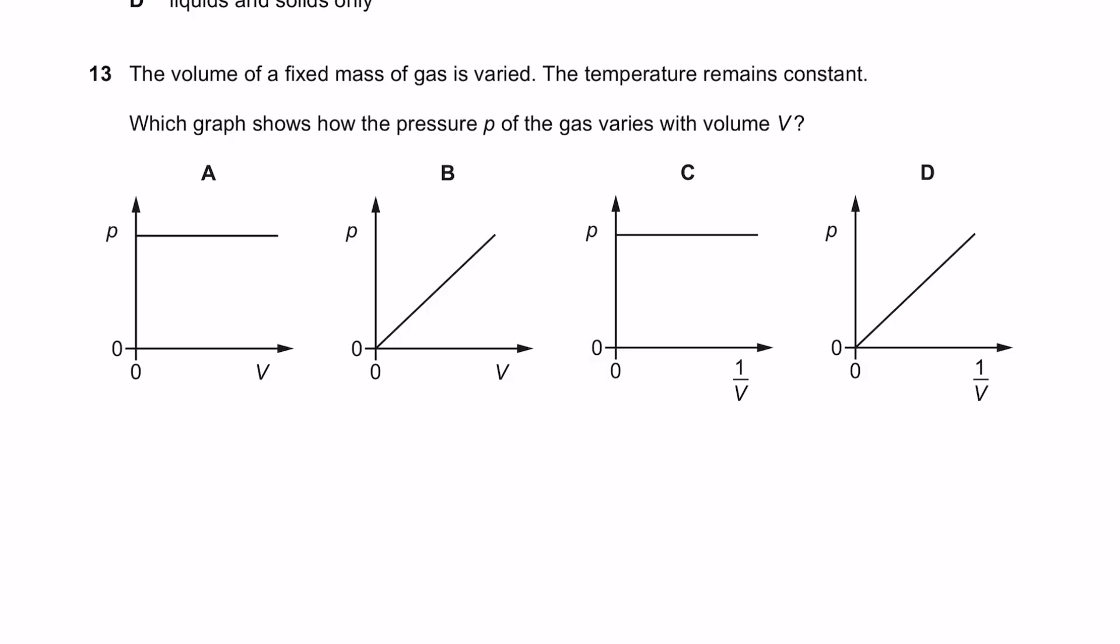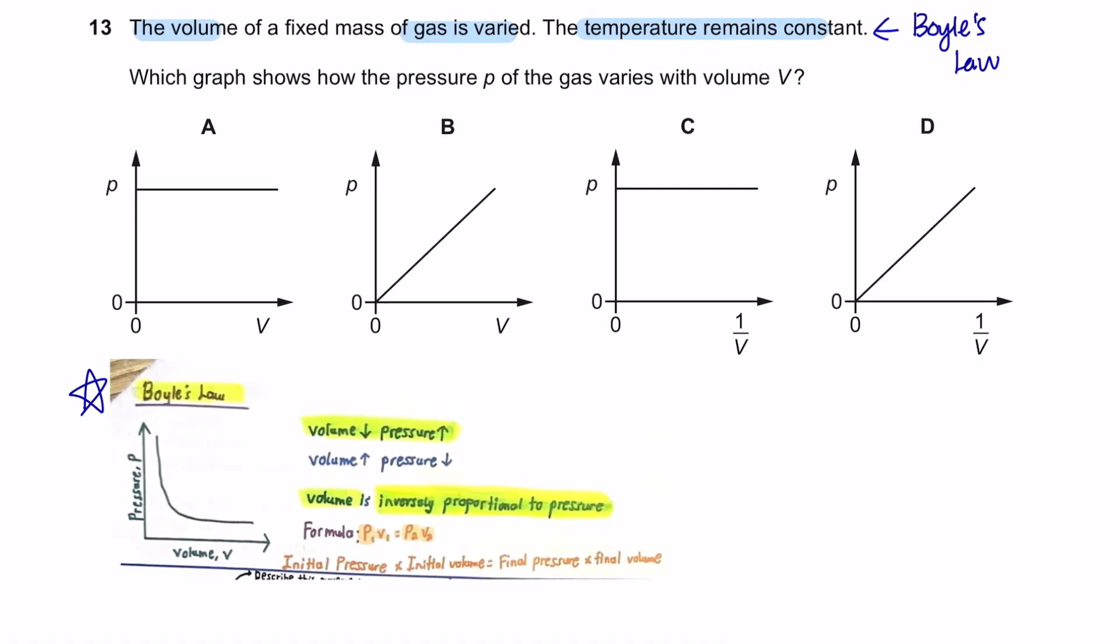Question 13. The volume of a fixed mass of gas is varied. The temperature remains constant. This here is discussing about the Boyle's Law. According to Boyle's Law, the volume is inversely proportional to its pressure. And the formula of Boyle's Law is P1V1 equals to P2V2. So as the volume increases, the pressure will decrease. Option A and B is the graph of pressure versus volume. And the graph is supposed to be looking like this. And none of these are, so the answers are not A or B. And graph C and D is plotted against 1 over volume. If it's plotted against volume, it is inversely proportional. If we inverse the volume, then we will have a directly proportional graph, which is D.